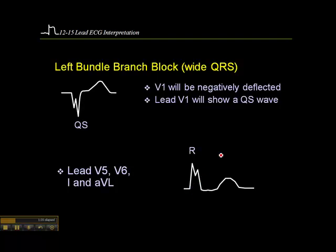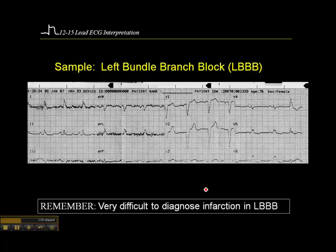Rabbit ears are not great criteria on their own. With a left bundle branch block, you can have a tall R-wave followed by a small R-wave, or you could have just the opposite — a little R-wave. It doesn't matter, really. What matters is we have a P-wave, we have a wide QRS, V1 is negatively deflected, and we have some sort of rabbit ears pattern in either V5 or V6. Lead I and aVL can also be used as supportive evidence.